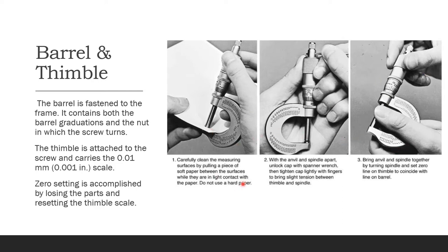To measure, first carefully clean the surface by pulling a piece of soft paper between the surfaces while they are in light contact — do not use hard paper. With the anvil and spindle apart, lock the cap with a spanner wrench, then tighten the cap lightly with fingers to bring slight tension between the thimble and the spindle. Adjust with the small wrench, then bring the anvil and spindle together by turning the spindle and set the zero line on the thimble to coincide with the line on the barrel.